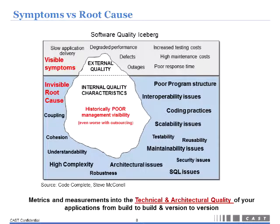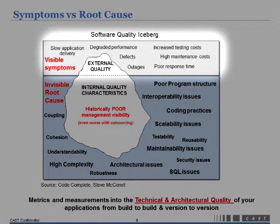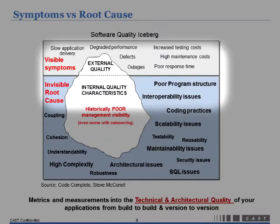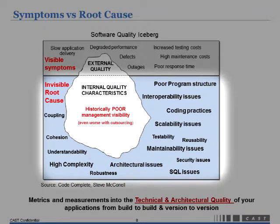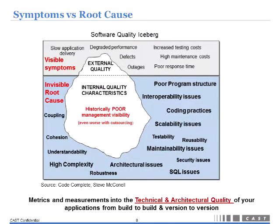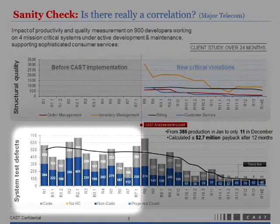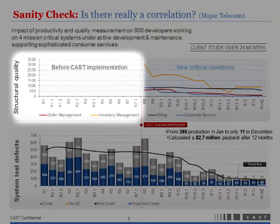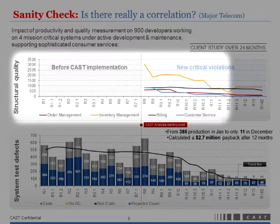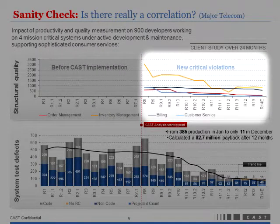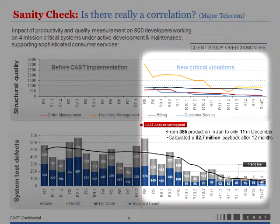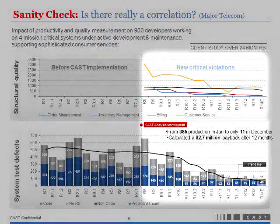Symptoms versus root causes: the symptoms are seen in many ways — something acting slowly, outages, defects. What we're really going to be talking about today is what leads to these symptoms. Executives want to know before something goes into production whether there's a high or low risk. Sometimes this risk lies in the system for many years before something huge happens. As a sanity check, this case study from a large telecommunications company shows they were measuring defects in production but never measuring structural quality. When they aggressively worked down violations of best practices, they saw production issues drop from 385 at the beginning of the year down to about 11.